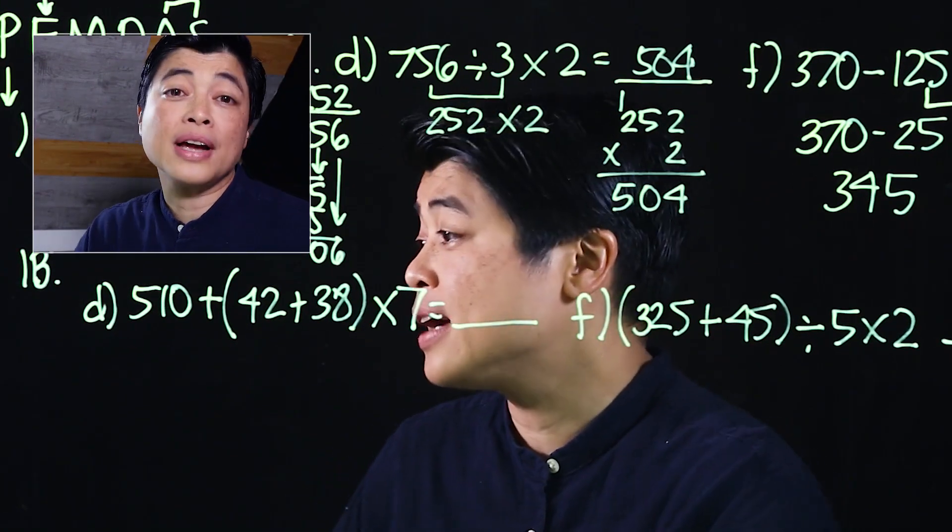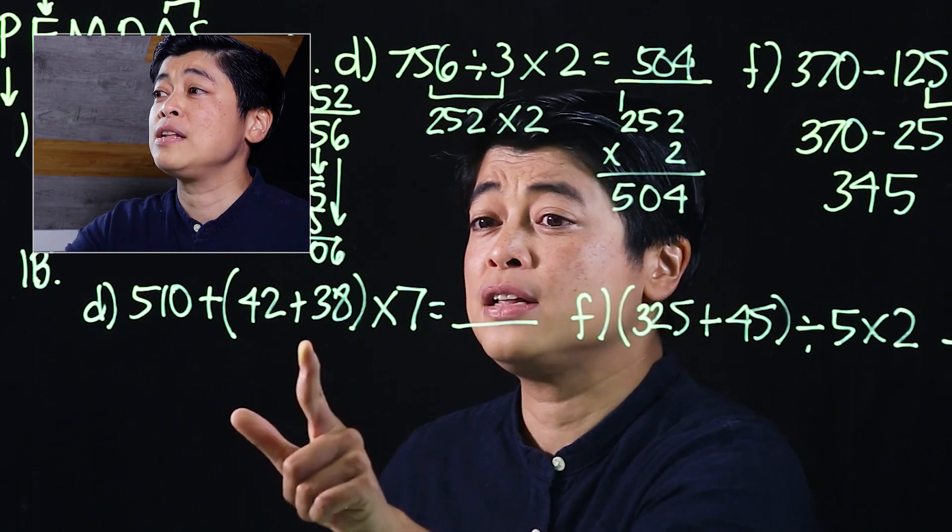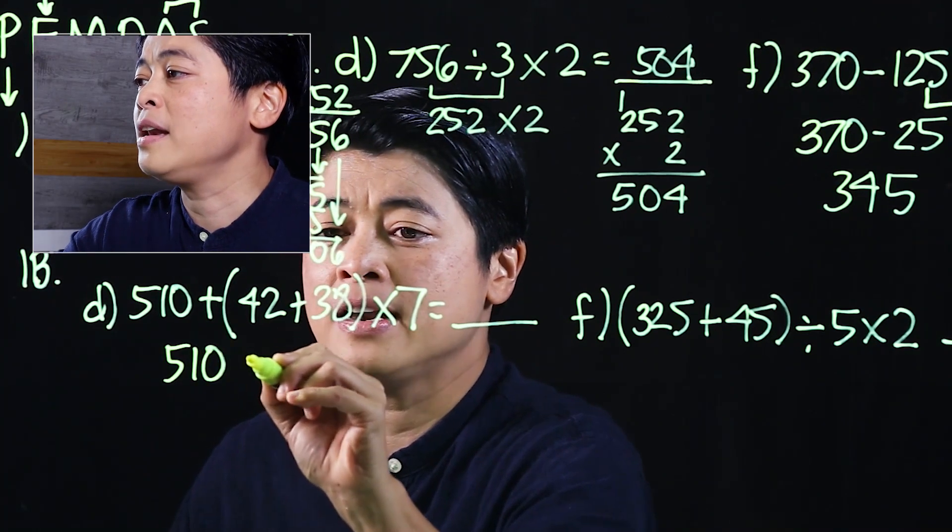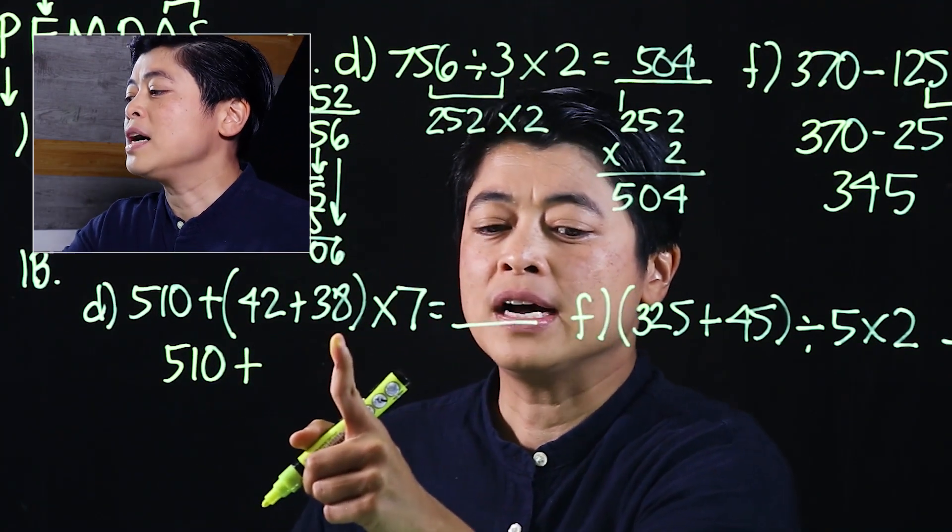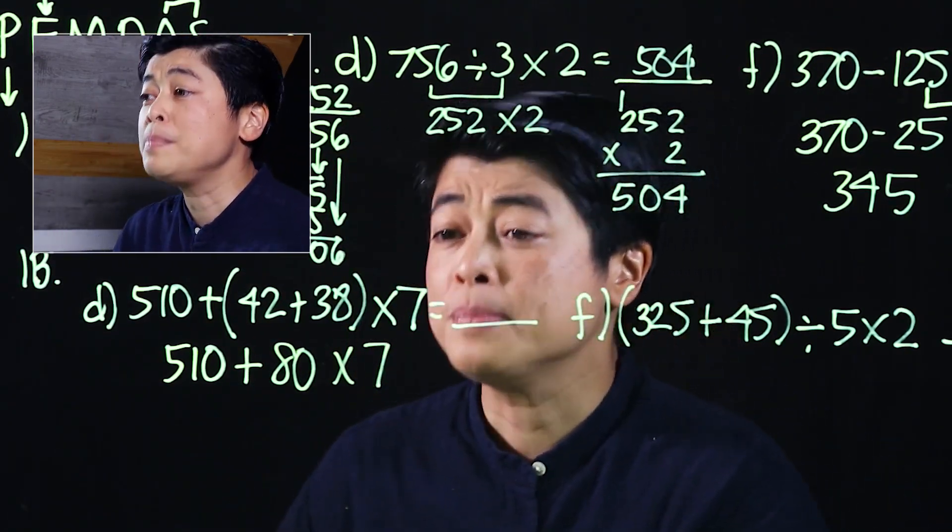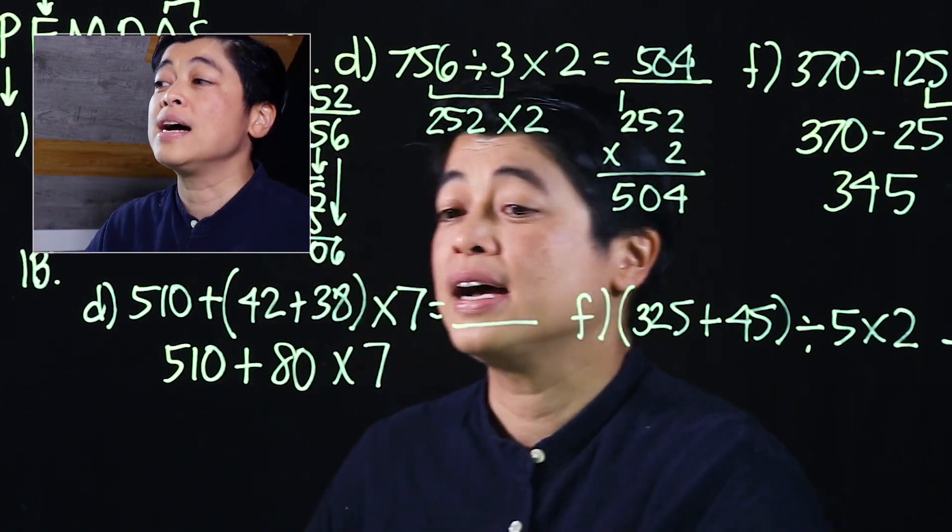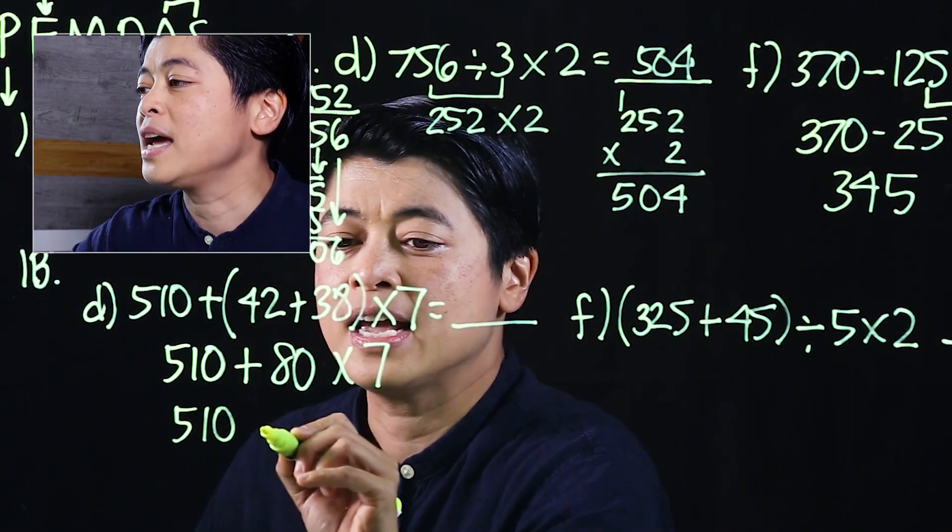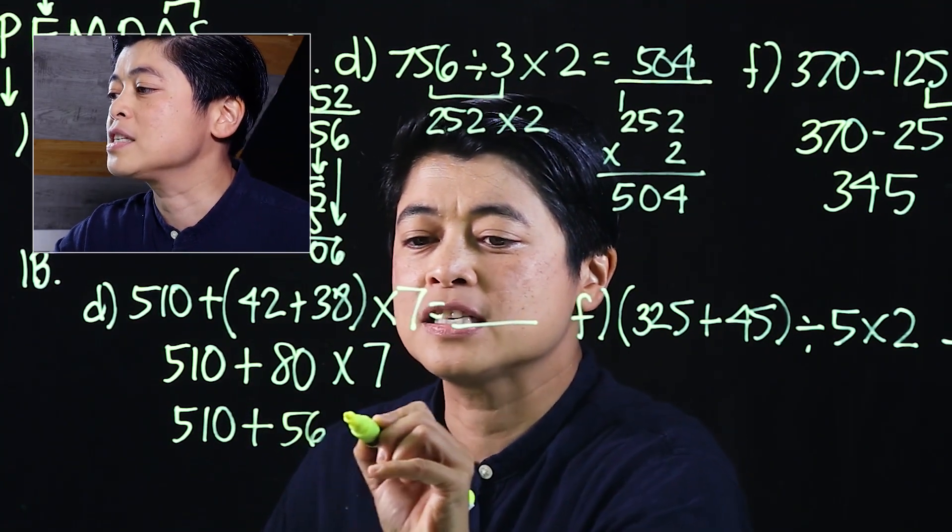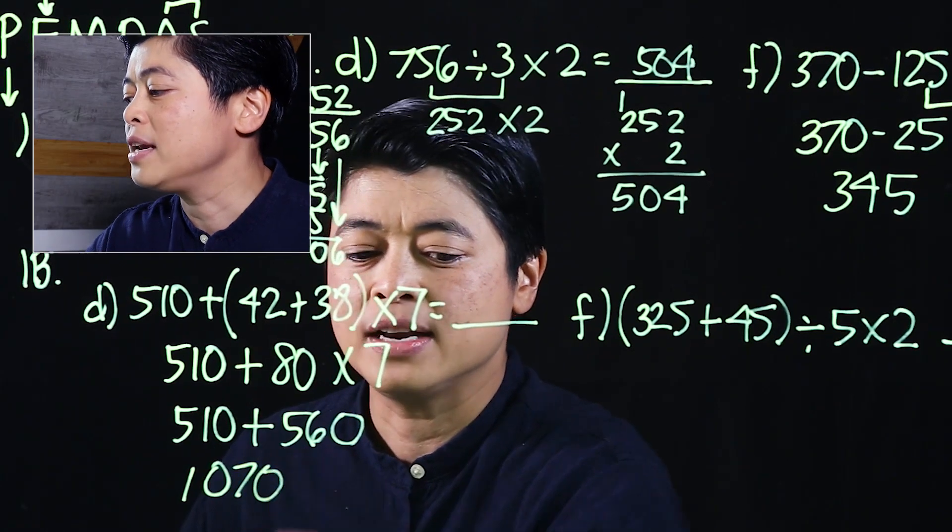In the next problem on 1b, it also has the same instructions. Now here the parentheses will show up, so the first thing that we need to do is work within the parentheses. That means this will be 510 plus 42 plus 38 is 80 times 7. Which means we now have addition and multiplication, but the multiplication has to come before the addition. This is 510 plus we multiply these two together, that would be 56 with a 0, which means now we can add. That will be 1070.